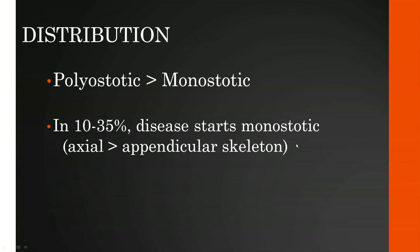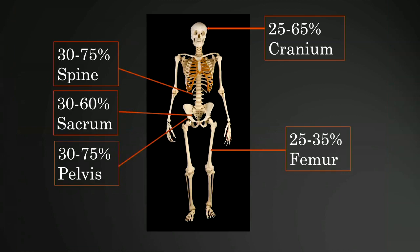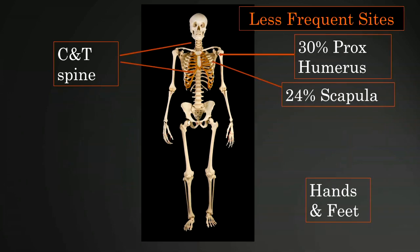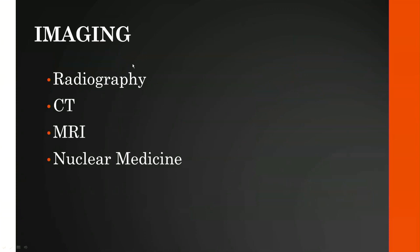This is more commonly a polyostotic than monoostotic disease, although in 10% to 35% of patients the disease starts as a monoostotic form. It typically affects the axial skeleton more than the appendicular skeleton. The most common sites of affliction are the lumbar spine, sacrum, and pelvis, followed by the skull and femur. Less frequent sites include the proximal humerus, scapula, cervical and thoracic spine, and even the hands and feet.